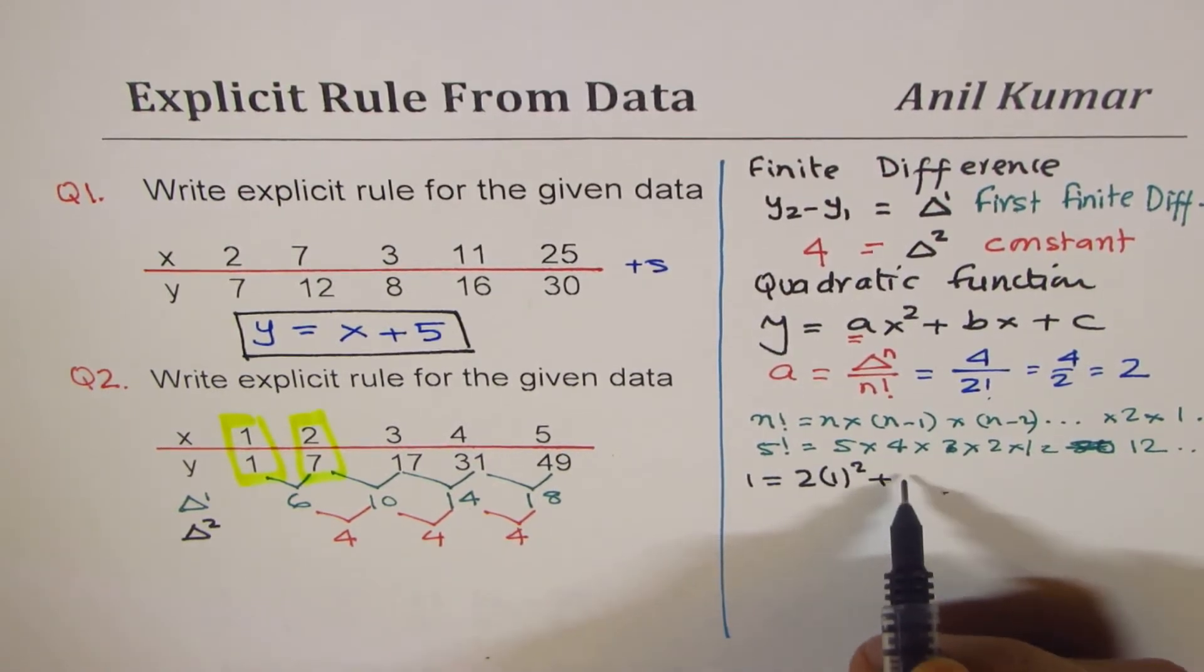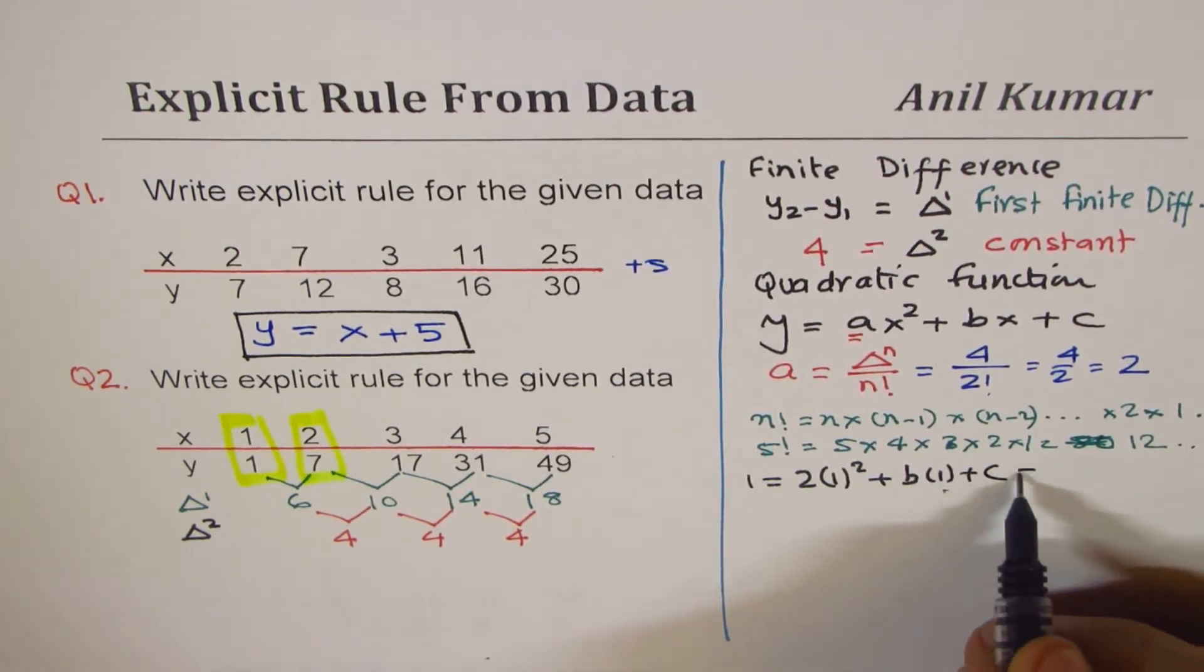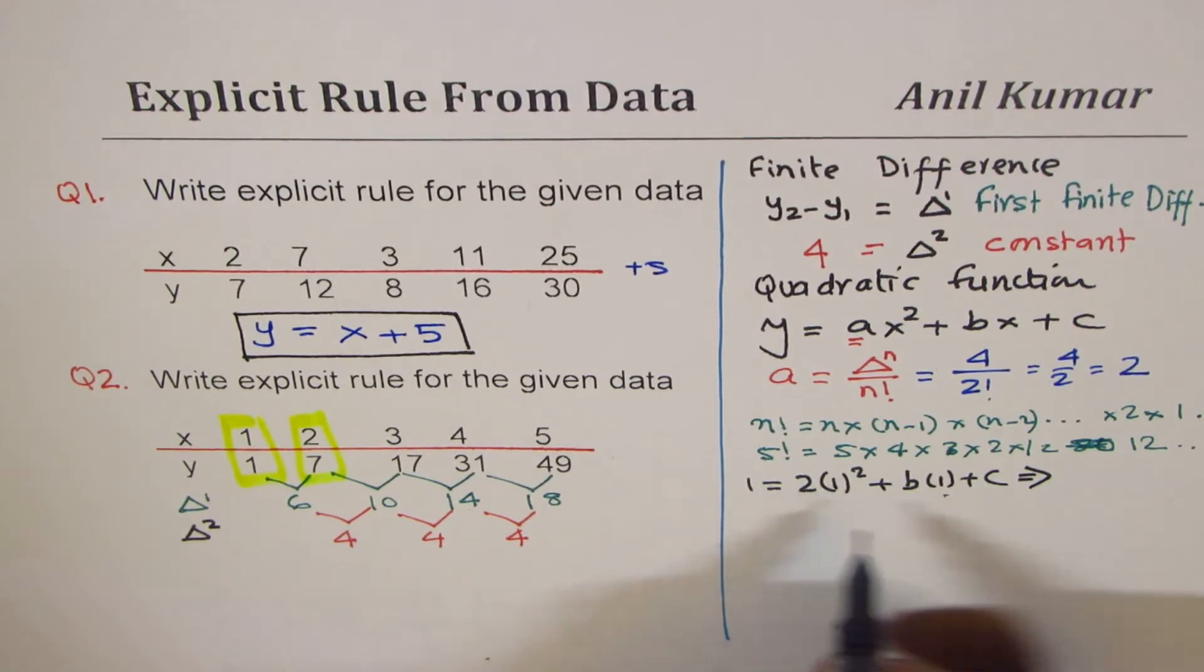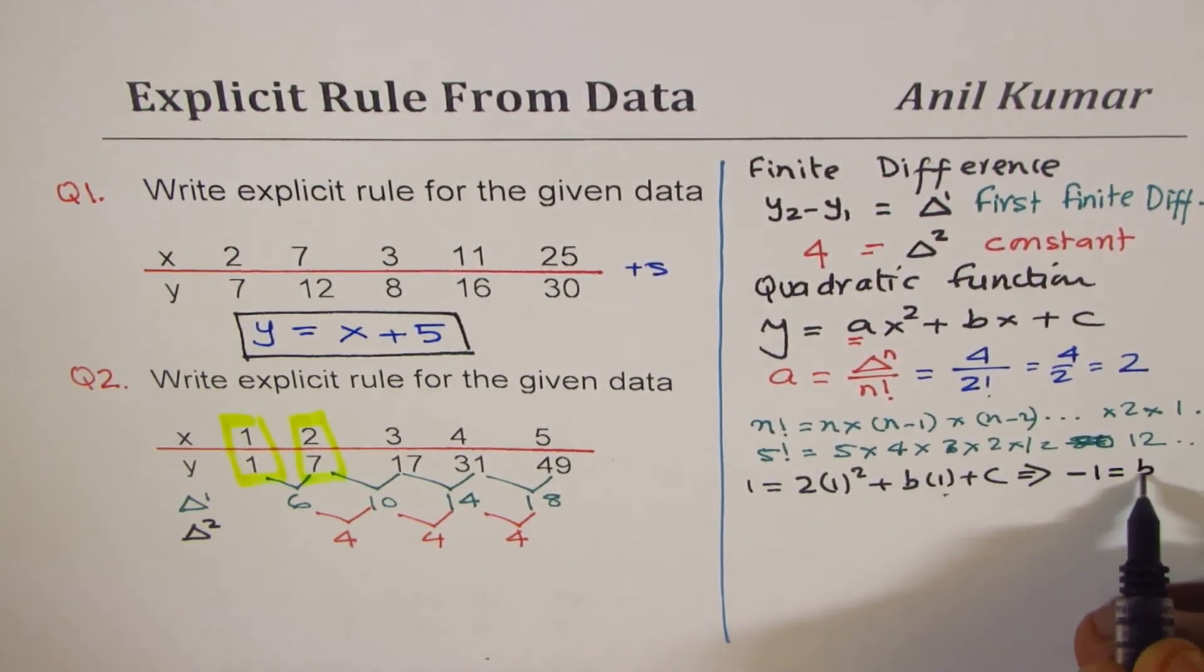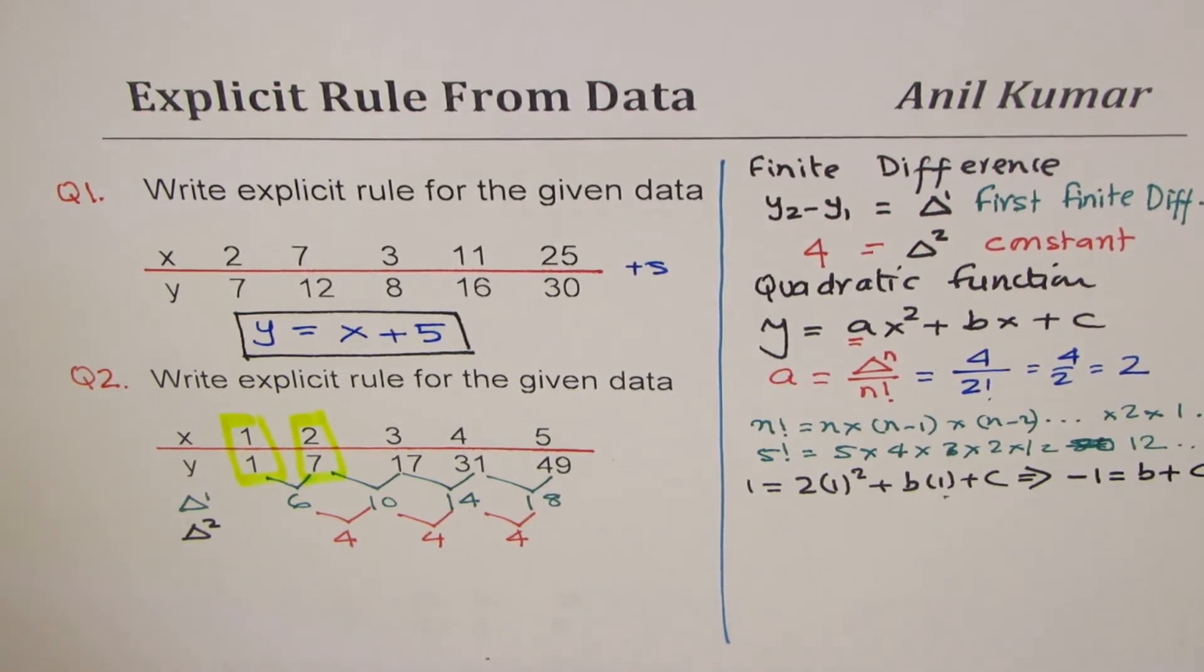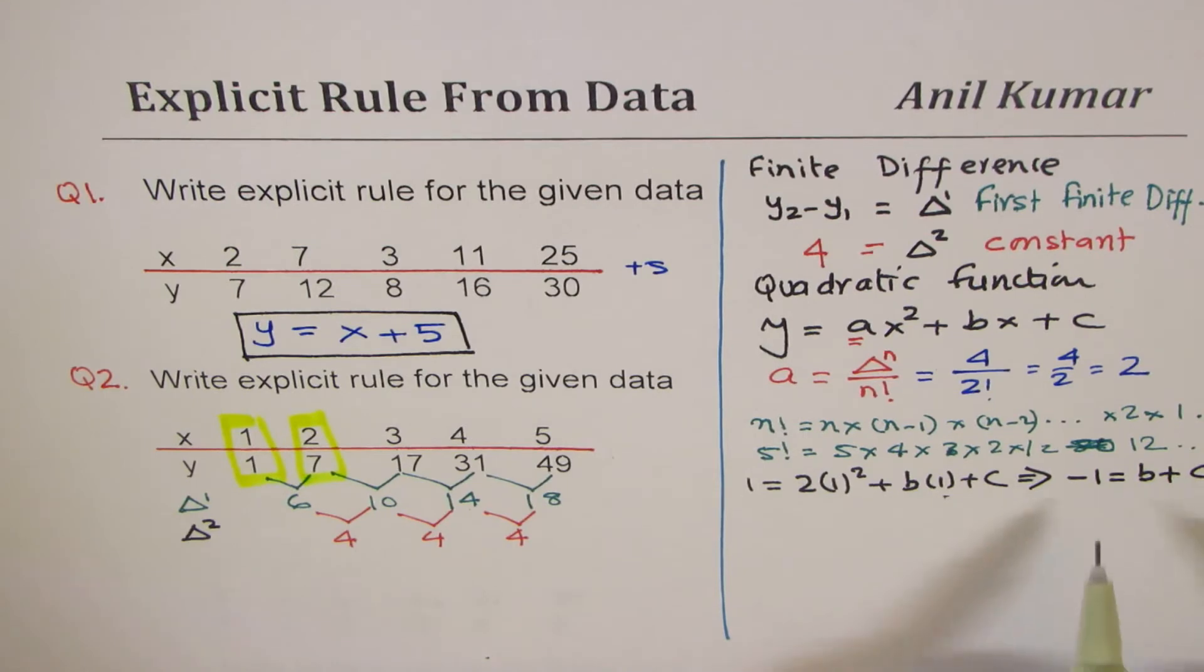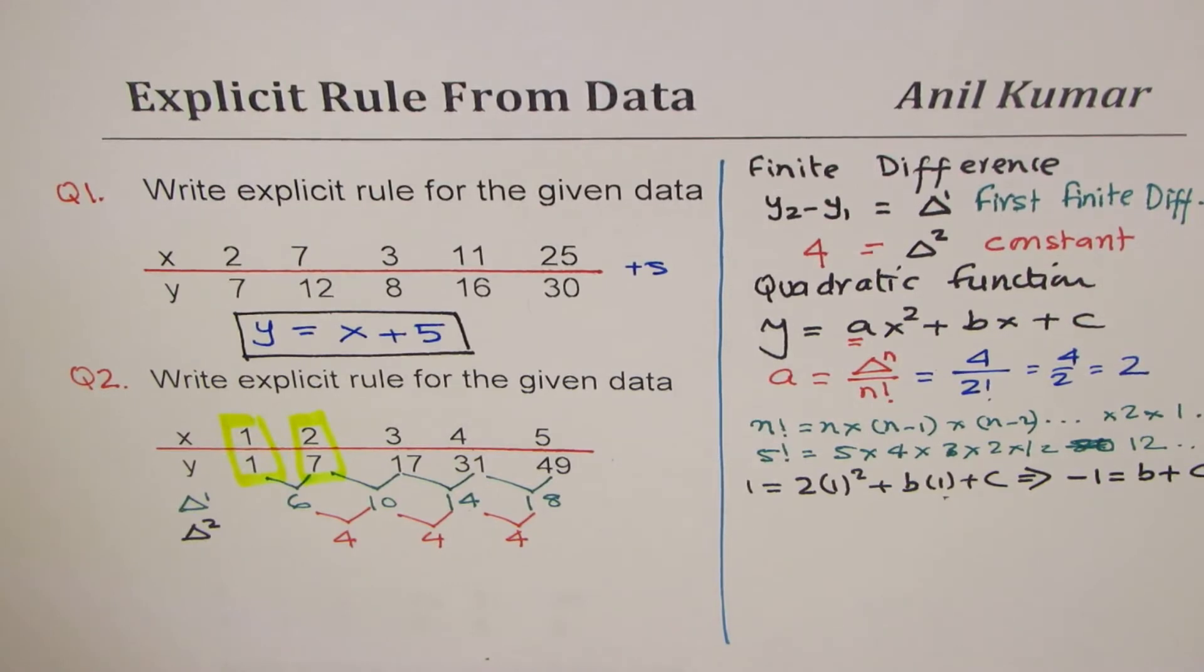That is to say the equation is—this is 2, so we can bring it on this side, so we have minus 1 equals b plus c. So what I did was I brought this 2 to the left side: minus 1 equals b plus c. So that is our equation number 1.